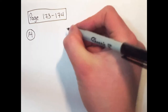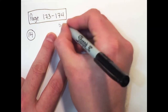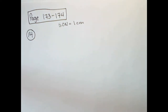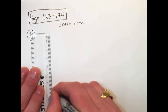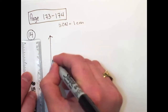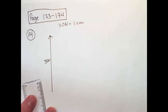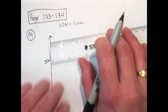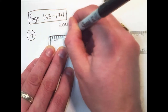Since it says to use a scale diagram, we'll start by creating a scale — maybe something like 5 newtons equals 1 centimeter. We have a 35 newton force, which would be 7 centimeters going directly north. Moving water exerts a second force of 20 newtons to the east, so 20 newtons would be 4 centimeters. Head to tail addition.